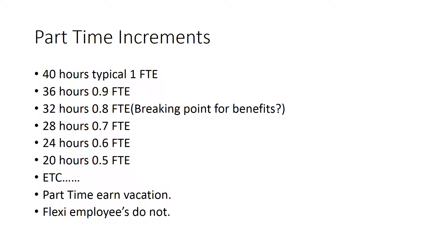Under 20 hours, there are typically no benefits — that's the flexi employee range. The full-time benefit cost is significant. I've seen it range from around 28–30% to as high as 60% of compensation, varying person to person based on insurance coverage and tenure-related premiums. Organizations look very closely at that, because when benefit differences are that large, it makes a major difference to the overall cost.